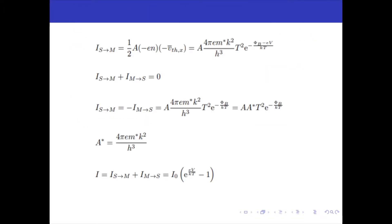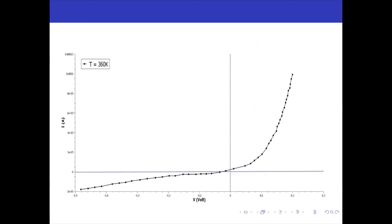ISM is due to electrons jumping from semiconductor to metal and can be obtained by multiplying the density of charge carriers at the interface, the area A of the junction, and the average absolute value of the x-component of thermal velocity of electrons. Using the Maxwell-Boltzmann velocity distribution, we get ISM as the following expression, where A* is called the Richardson constant. Since at zero bias there is no net current flow, ISM is balanced by IMS, and we get IMS from this. The total current I is the sum of ISM and IMS, and the resulting IV curve increases exponentially with a very low turn-on voltage.